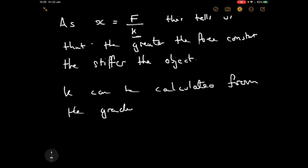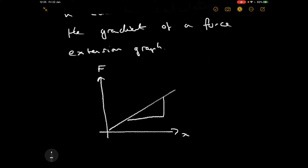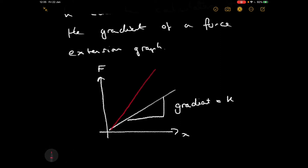k can be calculated from the gradient of a force-extension graph. If we plot force against extension and get a linear line, a steeper gradient means a stiffer material — something designed so that when you apply a certain force, you get less extension out of it.